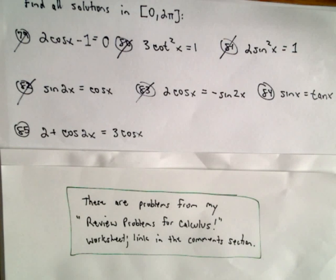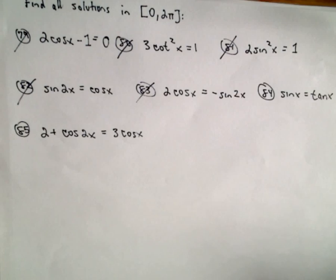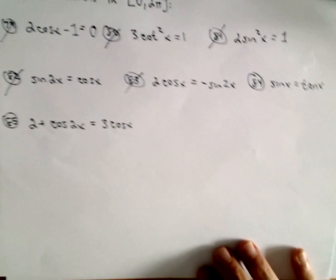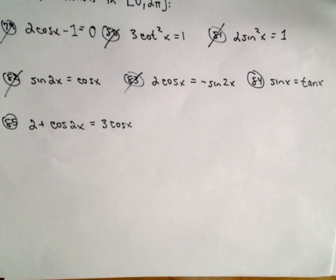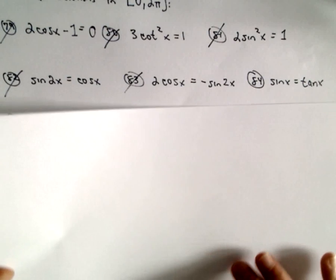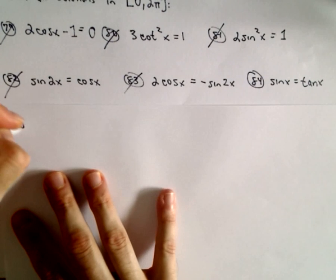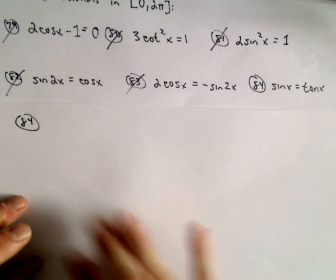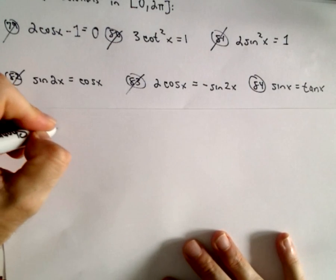These are going to be the last two problems for my review problems for calculus worksheet. Again, these problems I think would also be good review problems if you just do the algebra section for algebra. They're also at the end of a pre-calculus course, so I mean that's all it's in here is basically algebra and pre-calculus stuff. So okay, 84 we've got sine